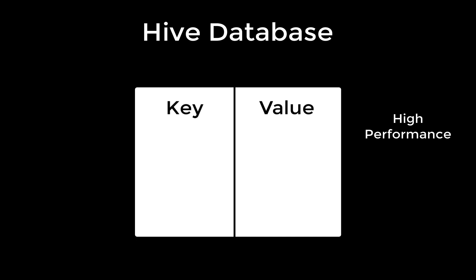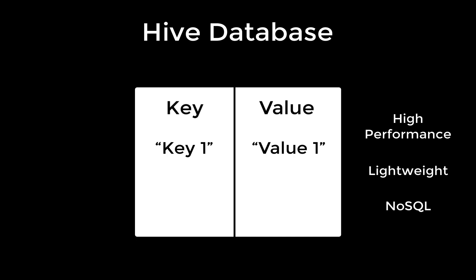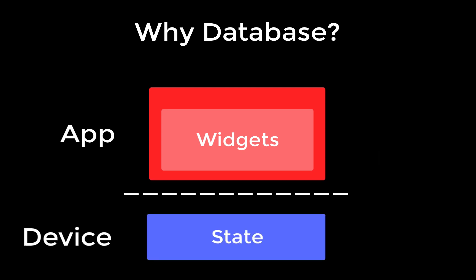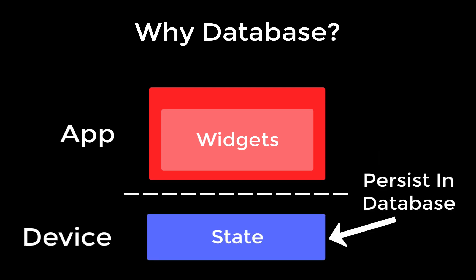Hive is a high-performant and lightweight NoSQL database where the data is stored locally on your device as key-value pairs. By default, if you close your Flutter app, then the state of your app is not persisted, and therefore we need a database storage to also persist our data locally on our device.